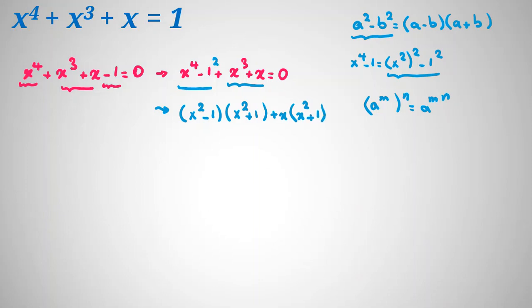Factoring x squared plus 1 from the expression, we reach: x squared plus 1 times x squared minus 1 plus x equal to 0. So we have two parts: the first part equals 0, or the second part equals 0.